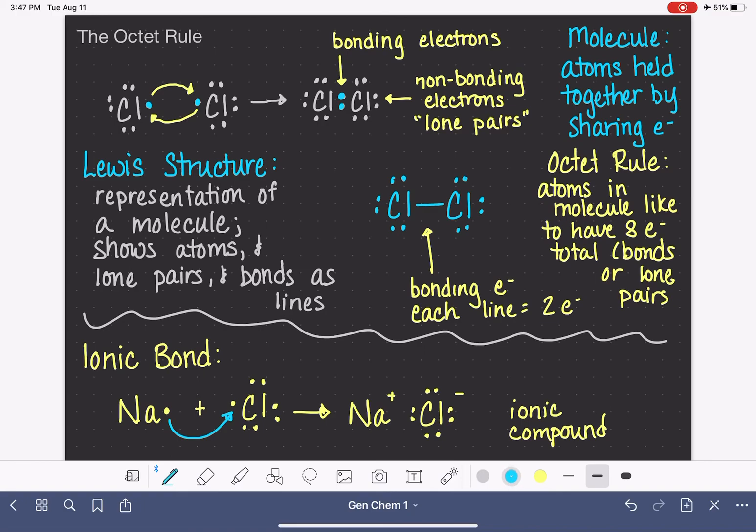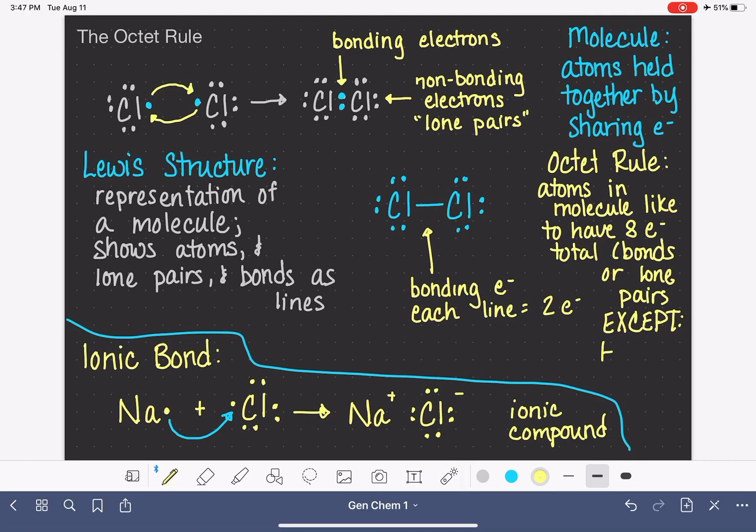Hydrogen only likes to have two electrons, but all of the rest of the atoms like to have eight.